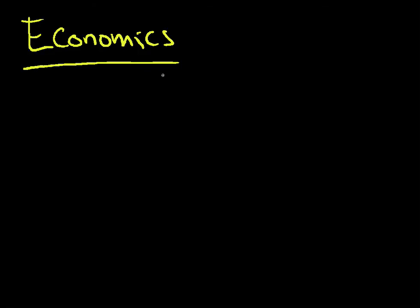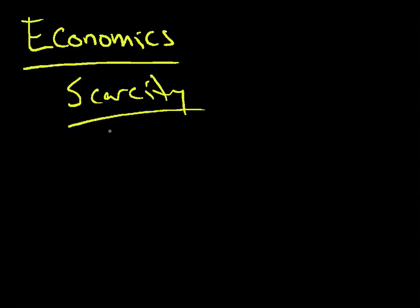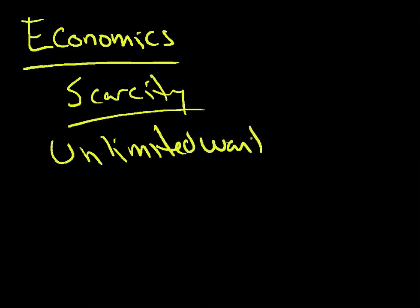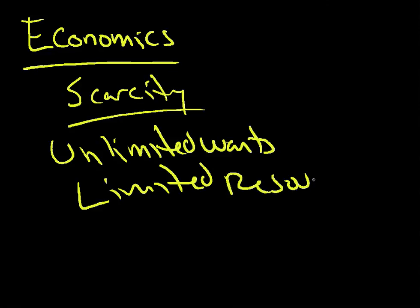So you're taking a course in economics. The first thing that these professors are going to throw at you is something called a production possibilities model. You're going to have to study that, but there's a real reason why you study it — it shows a good picture of something called scarcity, and it also focuses on the problem of unlimited wants versus limited resources.